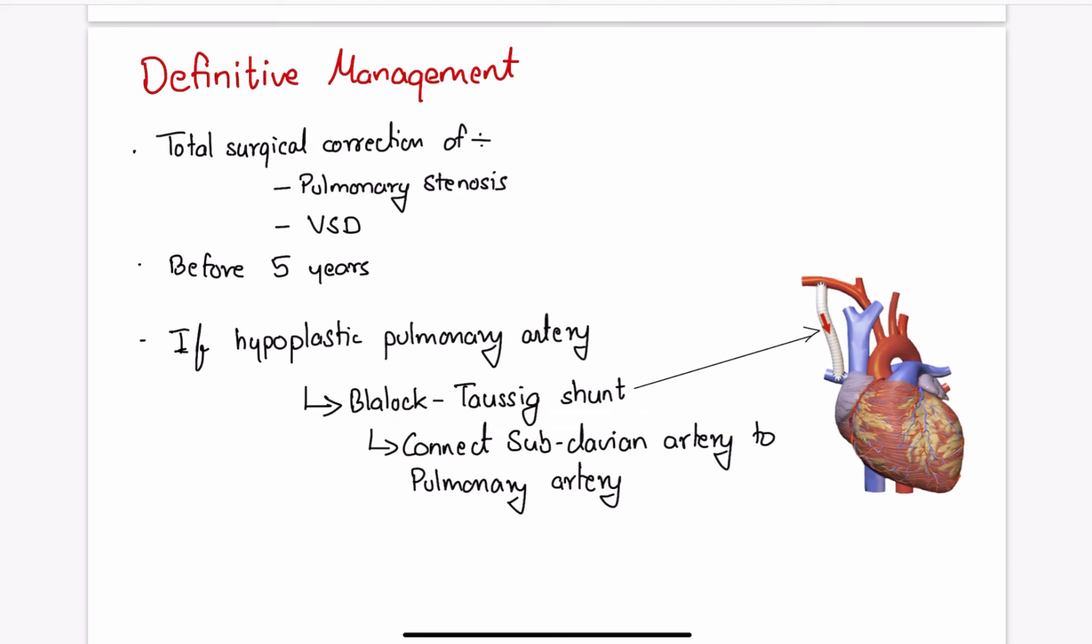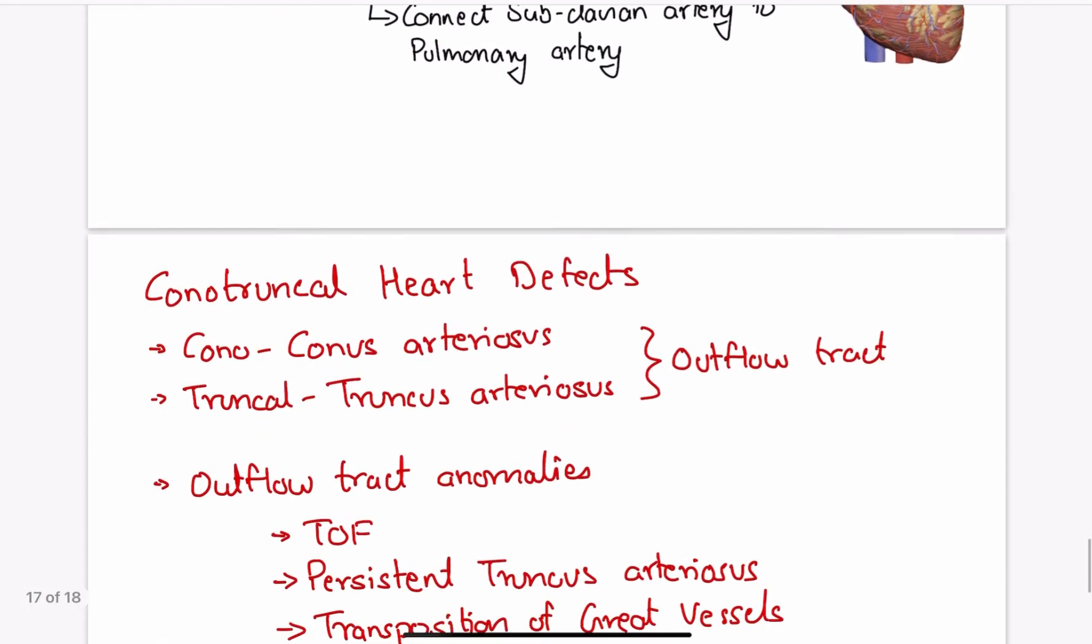The Blalock-Taussig shunt mimics the role of ductus arteriosus meaning it allows blood to flow from a major artery, preferably subclavian artery, through a connection to the pulmonary artery. Not only does this allow more blood to be oxygenated by the lungs, it also encourages the pulmonary arteries to grow making the next surgery easier.